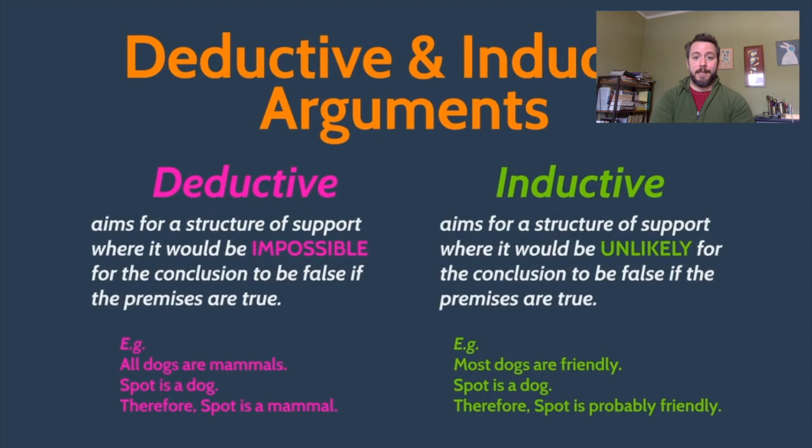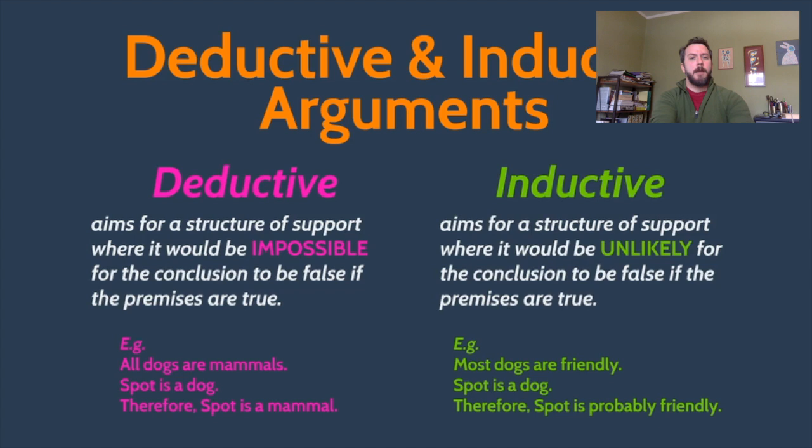The difference between a deductive and an inductive argument has to do with what exactly that argument is aiming for. A deductive argument is aiming for a certain kind of relationship between the premises and conclusion — we arrive at the conclusion with some sort of certainty. The structure of support that a deductive argument is aiming for is one where it would be impossible for the conclusion to be false, so long as the premises are true.